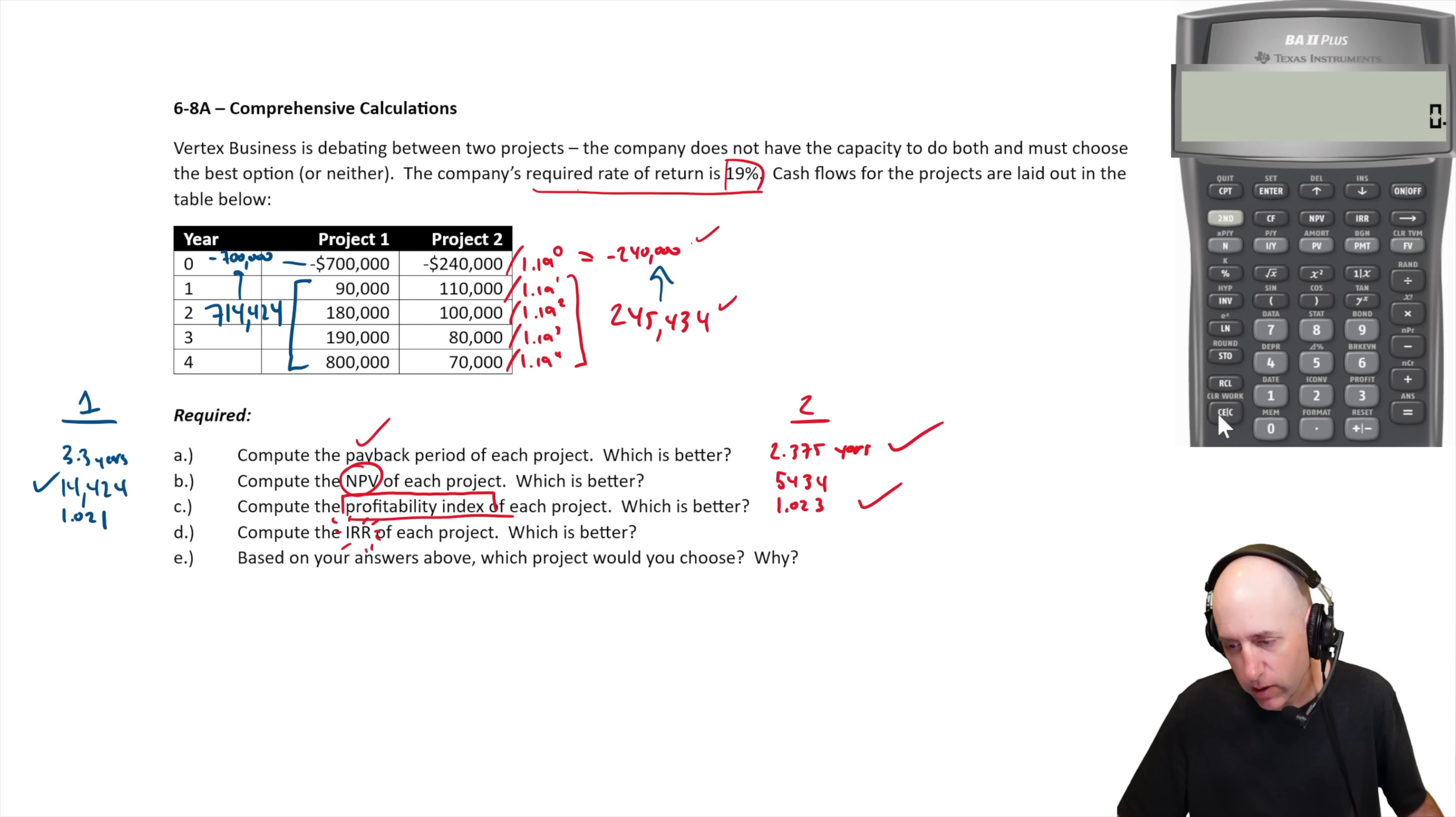Next, we do IRR. So we're going to enter our cash flows again. I've cleared my memory to do this from scratch, I'll do project one first. 700,000 negative is my cash flow at time zero. So I do enter my time zero cash flows here. Cash flow at time one, 90. Cash flow at time two, and this one, there's no way to do it by hand. All the other ones I could have done by hand just as easily, take me two more minutes or maybe five more minutes. But you can definitely do it. This one you just can't do by hand. Well, it's not easy to do by hand. Let's just put it that way. Cash flow at time two, 180. Cash flow at time three, 190.